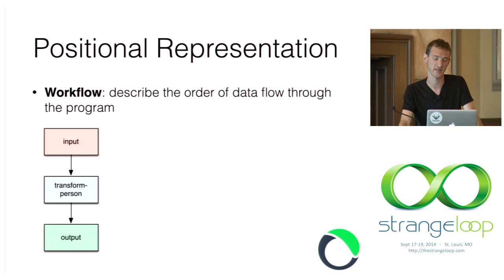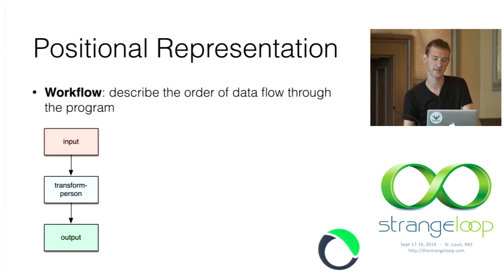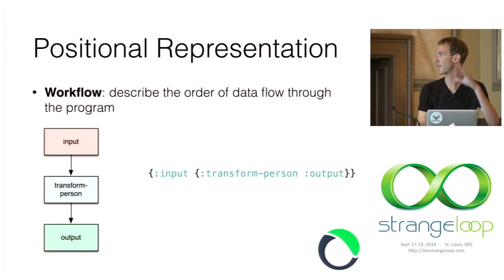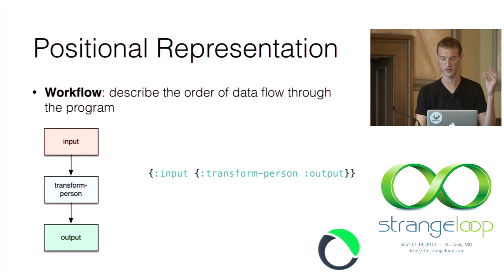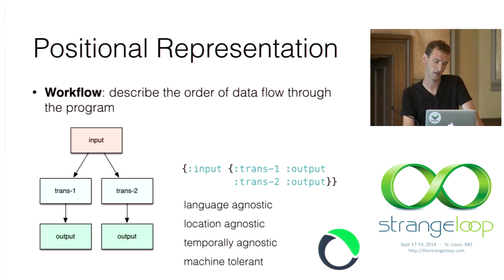The next thing to pull out is positional representation — the order that data flows through your system. Pictorially, our example looks like a directed acyclic graph or tree, which I find easy to reason about. In Onyx, this is represented as a map, because maps are actually just trees — you can have as many roots as you want, branching arbitrarily wide and deep. The keywords in the map correspond one-to-one to the nodes in the graph. When you have this strict structural representation, you get back all four characteristics: maps transcend language, can go on a wire or in a database, and are great for working with other programs.